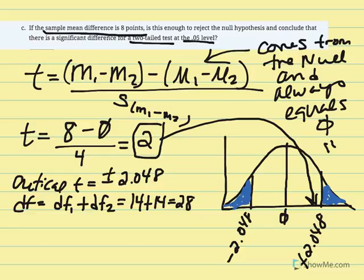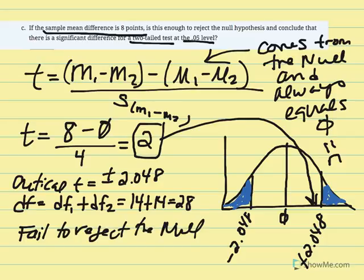We fail to reject the null. The probability of obtaining a t statistic equal to 2 given the mean difference between the samples is greater than our alpha, indicating that t was not large enough to fall in the critical region. Therefore, we fail to reject the null hypothesis.